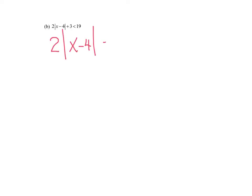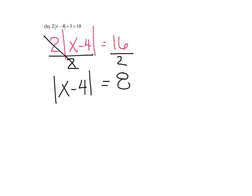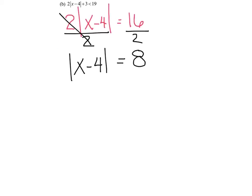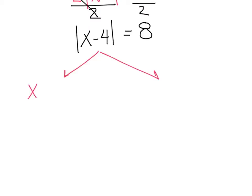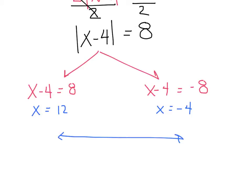Here's a trickier one. Remember, the first goal is to get the absolute value by itself. Subtract three first: two times the absolute value of x minus four equals sixteen. Then divide both sides by two: the absolute value of x minus four equals eight. Now write two equations: x minus four equals eight, giving x equals twelve, and x minus four equals negative eight, giving x equals negative four. Place them on a number line because it was an inequality.